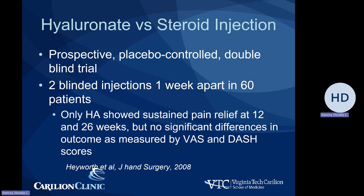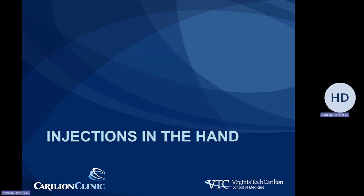When comparing injections in those joints — comparing steroid injection with hyaluronate — a prospective study was completed that found them essentially equivalent with no significant difference in outcome. At this point for hand joints, hyaluronate injections are rarely done; mostly steroid injections are used for pain relief and temporary improvement.